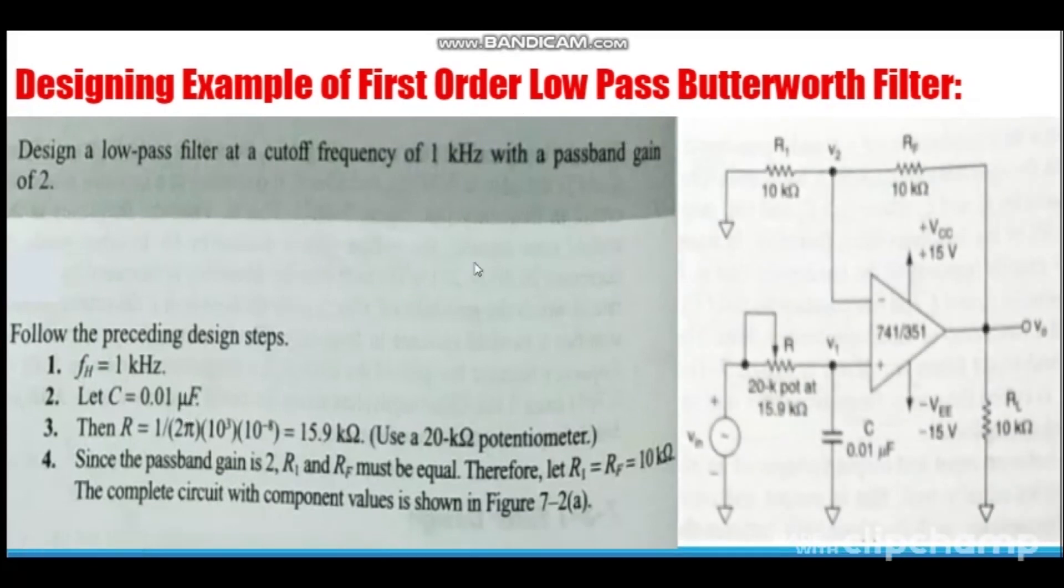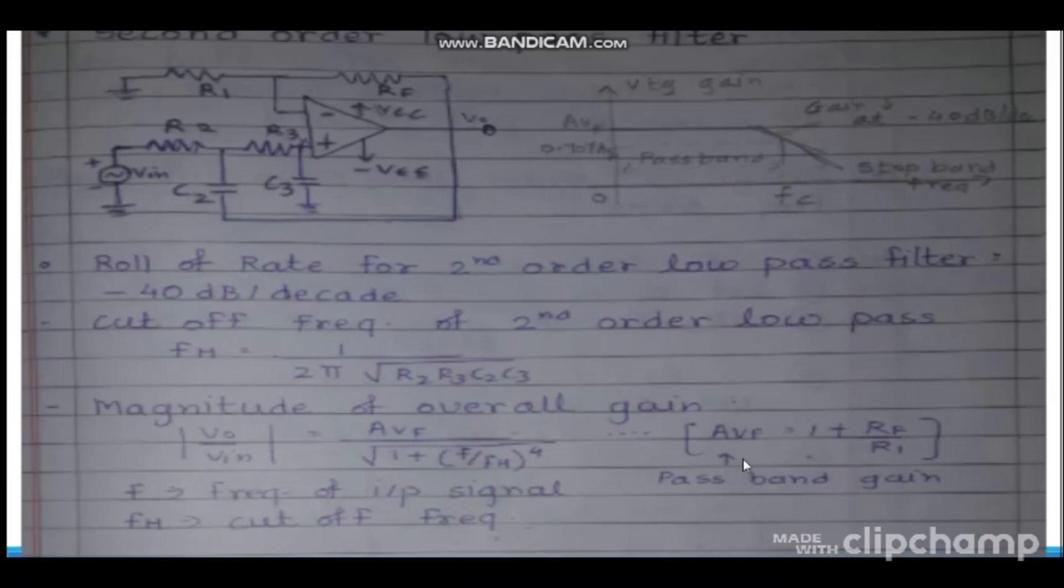So this is an example given over here. Design a low pass filter at cutoff frequency of 1 kilohertz with pass band gain of 2. So cutoff frequency FH equals to 1 kilohertz. You can set the value of C but it should be less than 1 microfarad, so here it is 0.01 microfarad. Then calculate R by using this formula. Pass band gain of 2 is given, therefore R1 and Rf must be equal, so here they have taken 10 kilo ohms. And by following all the procedures you are getting these values, and then finally they have drawn the circuit diagram. You have to draw circuit diagram in exams or else marks will be deducted.